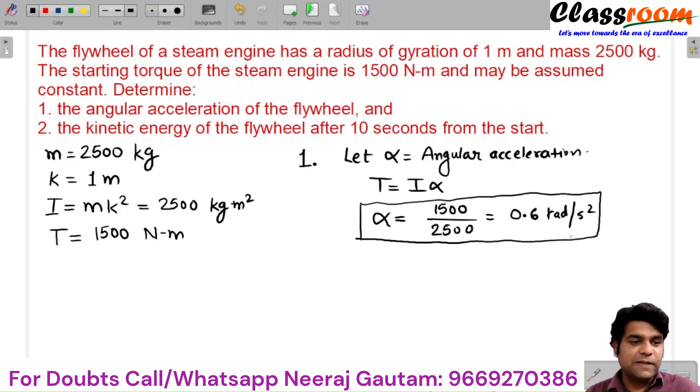Your first answer, which is very simple. Now for the second part: the kinetic energy of the flywheel after 10 seconds from the start. The flywheel starts from rest, so ω₁ = 0. Because it is starting from the rest position, the initial angular velocity of the flywheel should be zero.